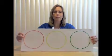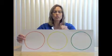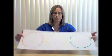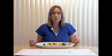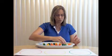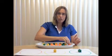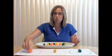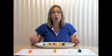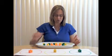For this sorting example, we will use a sorting mat with a green circle, a yellow circle, and an orange circle. To sort these cubes, we will place them one at a time into their corresponding color circle — green with green, yellow with yellow, and orange with orange — until they are all inside their color circle.